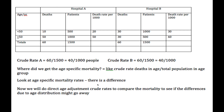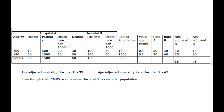So we want to calculate — to do a direct age adjustment of the crude rates to compare the mortality, to see if the differences due to age adjustment might go away. This is the same table from the previous slide, but now I've added a bit here to begin the age adjustment.